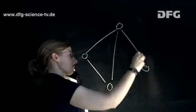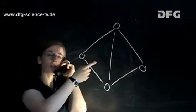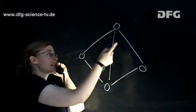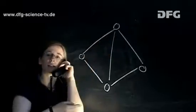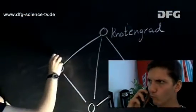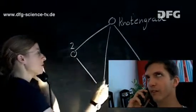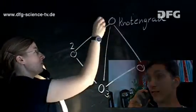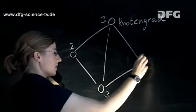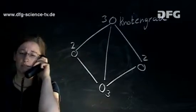Now then, if we take a look at one of these nodes and count the number of edges that are adjacent to it, then we have what we call the node degree. Taking a look specifically at this graph, here we have got a node degree of 2, here a node degree of 3, up here also a node degree of 3, and here it's 2 again.